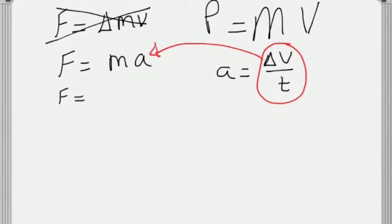That gives us force equals mass delta v over t. If we diagonal slide the t, we end up with force times time equals the mass times a change in velocity.